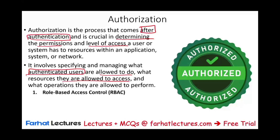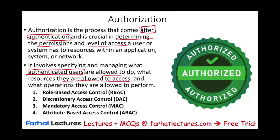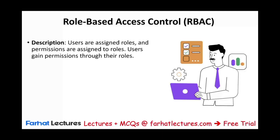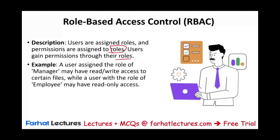There are different levels of authorization. This involves identifying and managing what authenticated users are allowed to do, what resources they're allowed to access, and what operations they're allowed to perform. We have role-based access control (RBAC), discretionary access control (DAC), mandatory access control (MAC), and attribute-based access control (ABAC). In role-based access control, users are assigned roles and permissions based on whatever role they play. For example, a user assigned the role of manager may have read-write access to a certain file, while a user with the role of employee may only have read-only access.